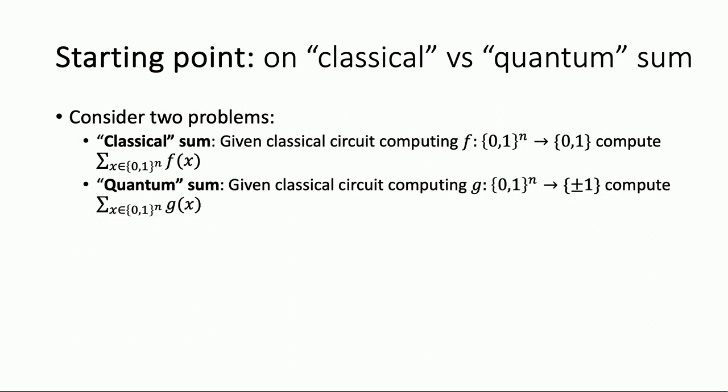Now the quantum sum problem: exactly the same setup, but now G maps to ±1 rather than {0,1} — that's the only difference. And we ask for the same thing: the sum over all inputs X of G(X). How hard is it? Still #P-hard — we're just relabeling the outputs, so this is not a fundamental difference. The worst-case complexity is clearly still #P-hard. Things get much more interesting when we relax the problem and consider approximations.